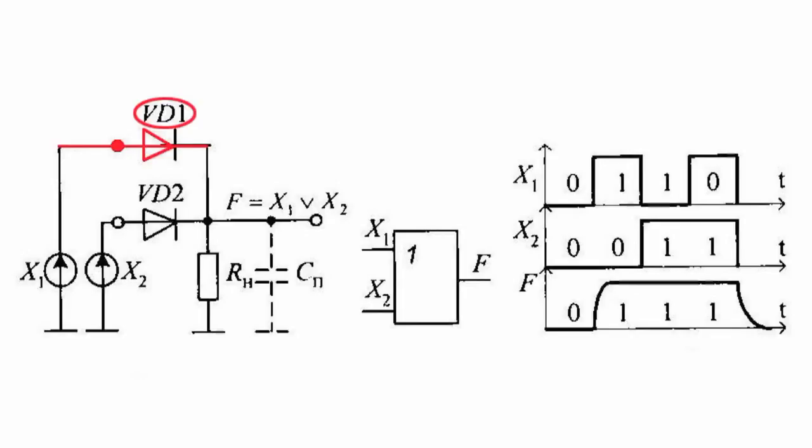If both the inputs are exposed to low voltage levels, the diodes are closed, the current does not flow in the load and the output voltage is virtually equal to zero.